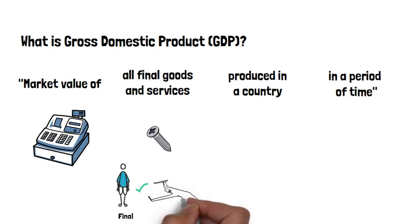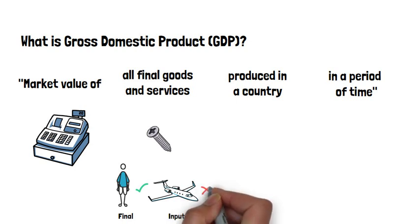But if an airline buys a screw to fix its plane, it is not counted as GDP. Only the final ticket price that passengers pay for their travel is included in GDP. This is done to avoid double counting of items that are used as inputs.